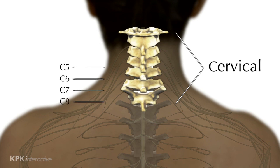C stands for cervical, and the numbers 5, 6, 7, or 8 refer to the spinal nerves in that section of the spinal cord. Keep in mind that these are general guidelines for levels of injury, and your own or your loved one's injury may differ due to its individual type and severity.